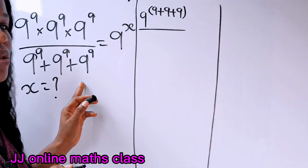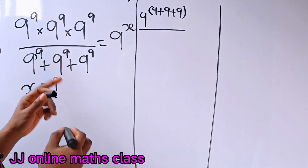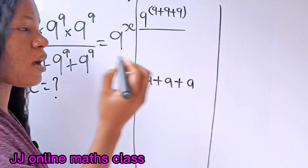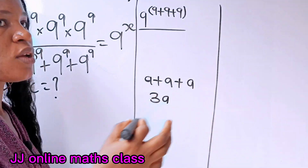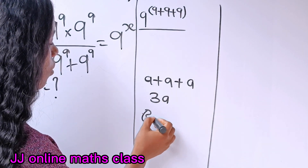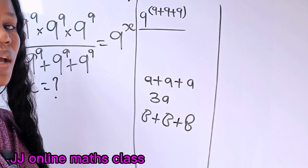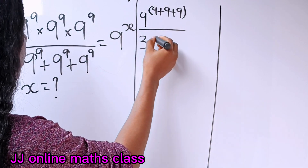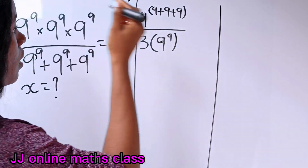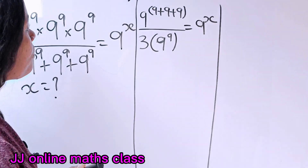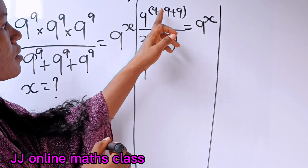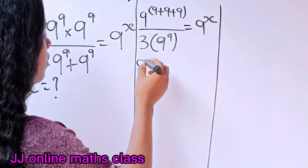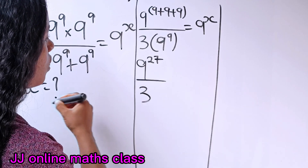Divided by... for the denominator, we have nine to the power of nine, plus nine to the power of nine, plus nine to the power of nine. It's just like saying a plus a plus a, which equals three a — similar to saying mango plus mango plus mango gives you three mangoes. So the denominator is the same as three times nine to the power of nine. And the numerator: nine plus nine is 18, and 18 plus nine is 27, giving us nine to the power of 27. Over three times nine to the power of nine.